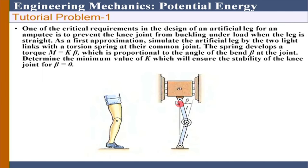We are trying to design an artificial leg, and there is a rotational spring as an additional part. This rotational spring will take the torque M = K times beta, where K is the rotational spring constant and beta is the angle. The energy of the rotational spring is ½Kβ², same as the linear spring where it is ½Kx², but here x is replaced by beta.